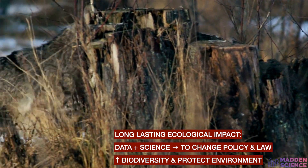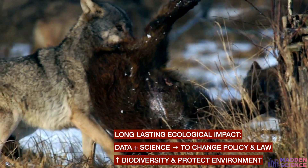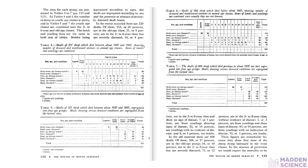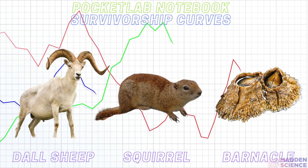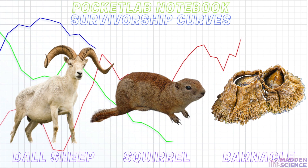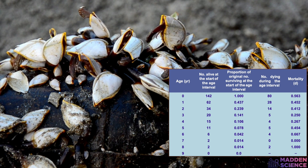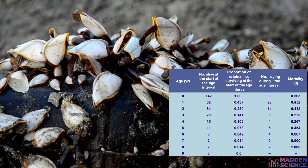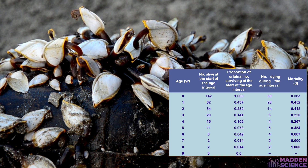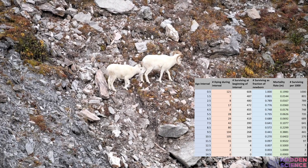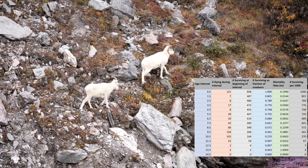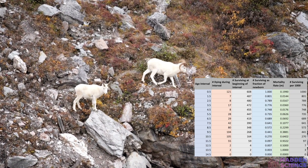The data he collected on Dall sheep was connected to his work with wolves. What do we do with this data? Here are the life tables and survivorship curves of Dall sheep, Belding ground squirrels, and barnacles. They help give us the age of the organism when they're most likely to die. We can see things like age, number alive at each interval, how many died, the death rate, and the death rate per 1,000.